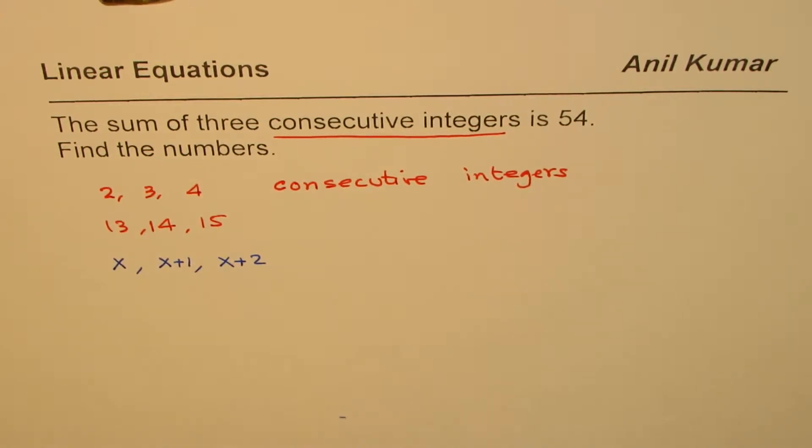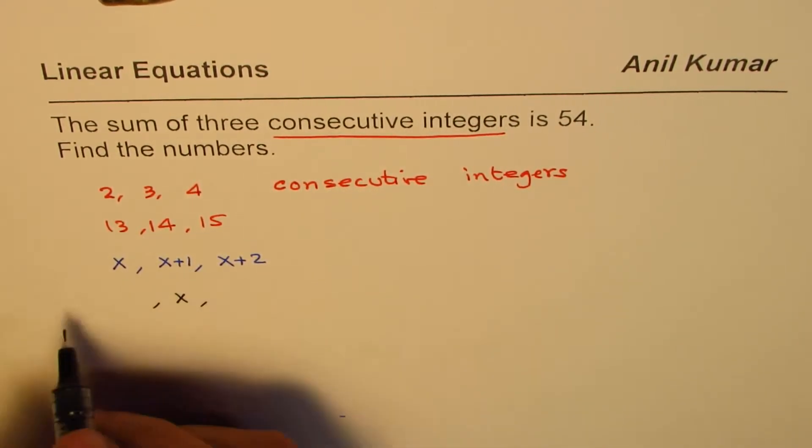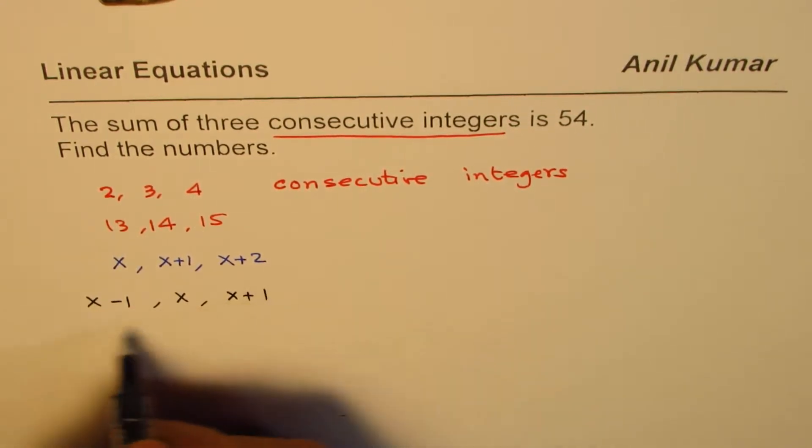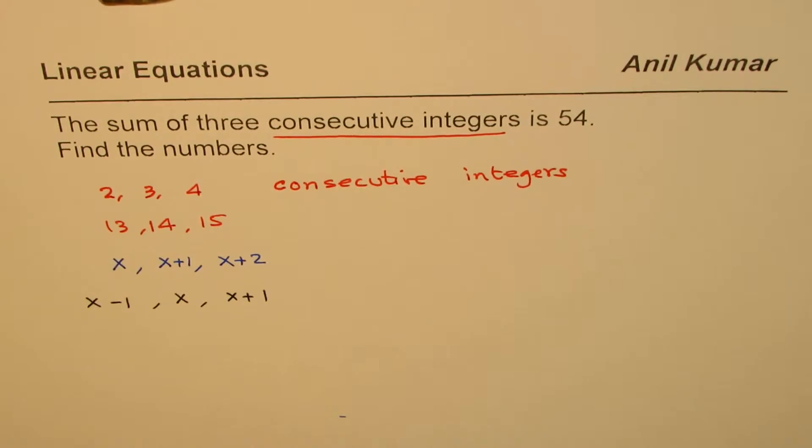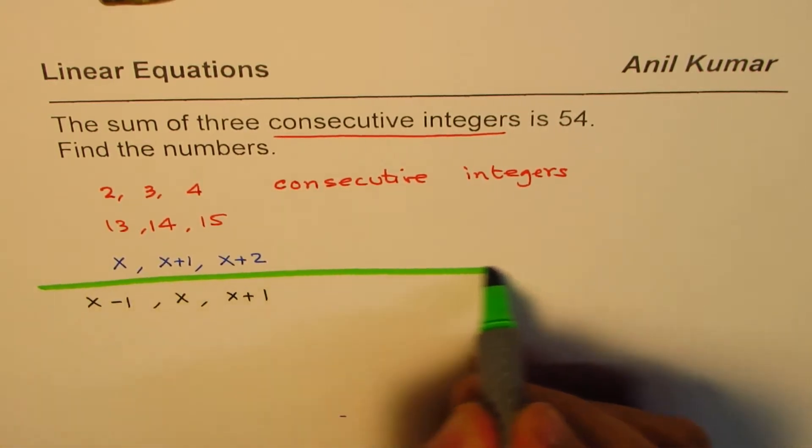Some of you could also write like this: x, the middle number, and difference minus 1 and add 1. That could also be a case. So, both are the right ways of defining. We'll try to solve this question using these two terms.